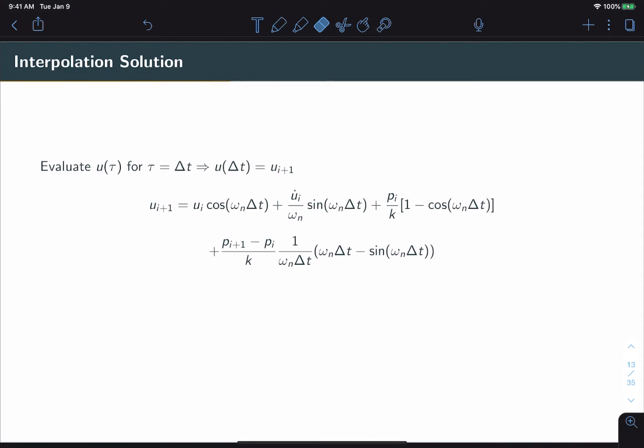So now we have an analytical response for the time period i to i+1. The last thing left to do is to solve for our response at time i+1, which is equivalent to the function u(τ) evaluated at Δt. All we need to do is plug in τ equal to Δt into the function we derived before.